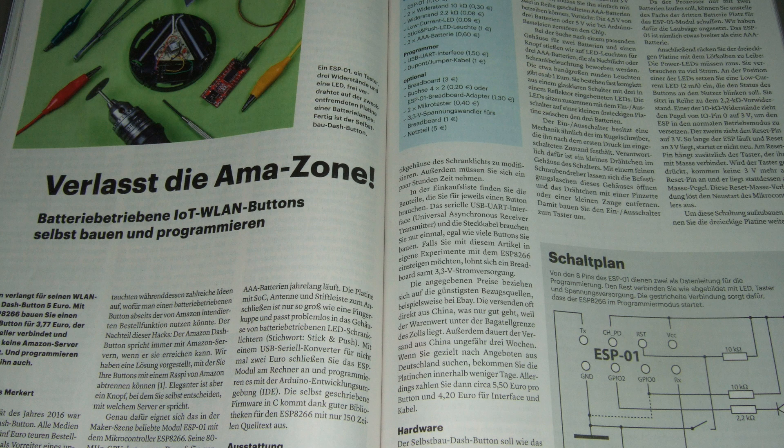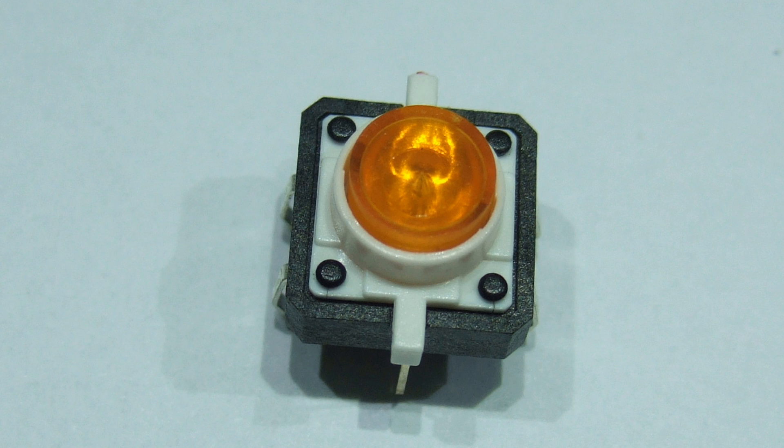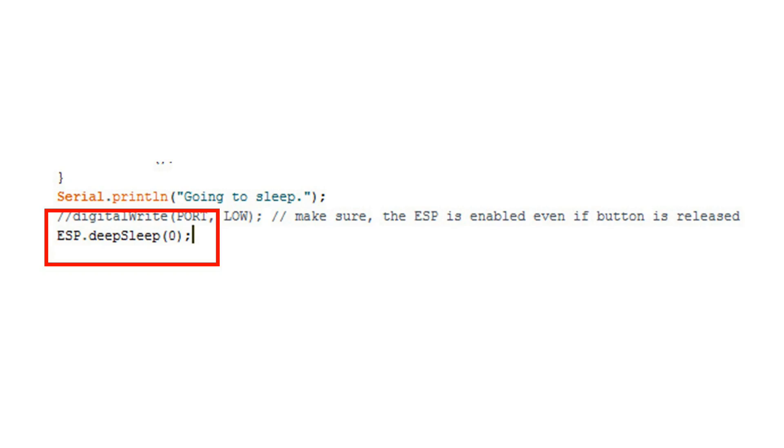To start the send, they switch the reset pin with a mechanical switch to low and back to high. So the ESP is started and does its thing to send a message. They use GPIO2 with an LED to signal success or failure. At the end, they set the ESP in deep sleep with the command ESP.DeepSleep 0.